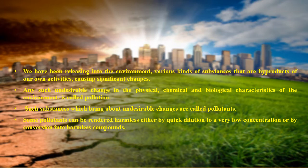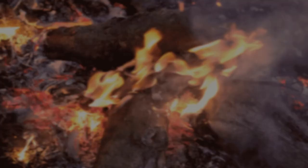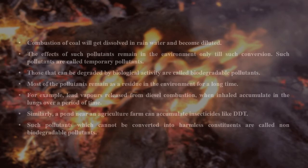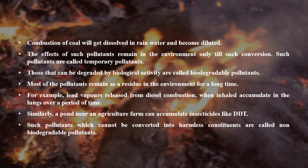Such substances which bring about undesirable changes are called pollutants. Some pollutants can be rendered harmless either by quick dilution to a very low concentration or by conversion into harmless compounds. We know that combustion of coal will get dissolved in rain water and become diluted. The effects of such pollutants remain in the environment only till such conversion. Such pollutants are called temporary pollutants.